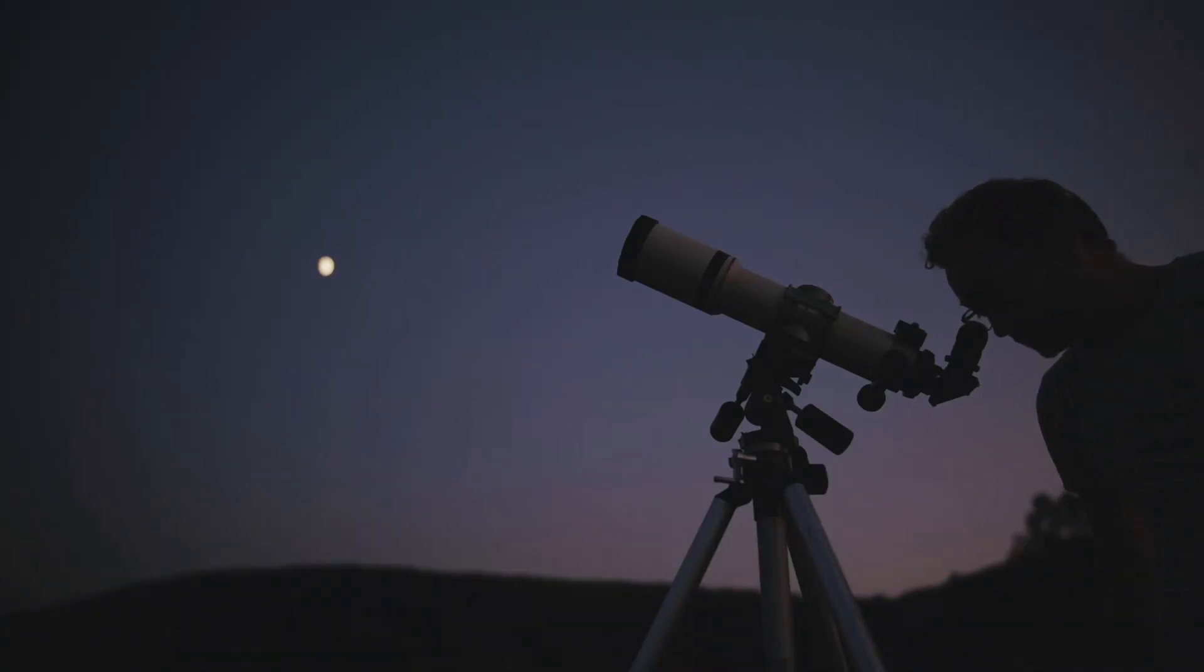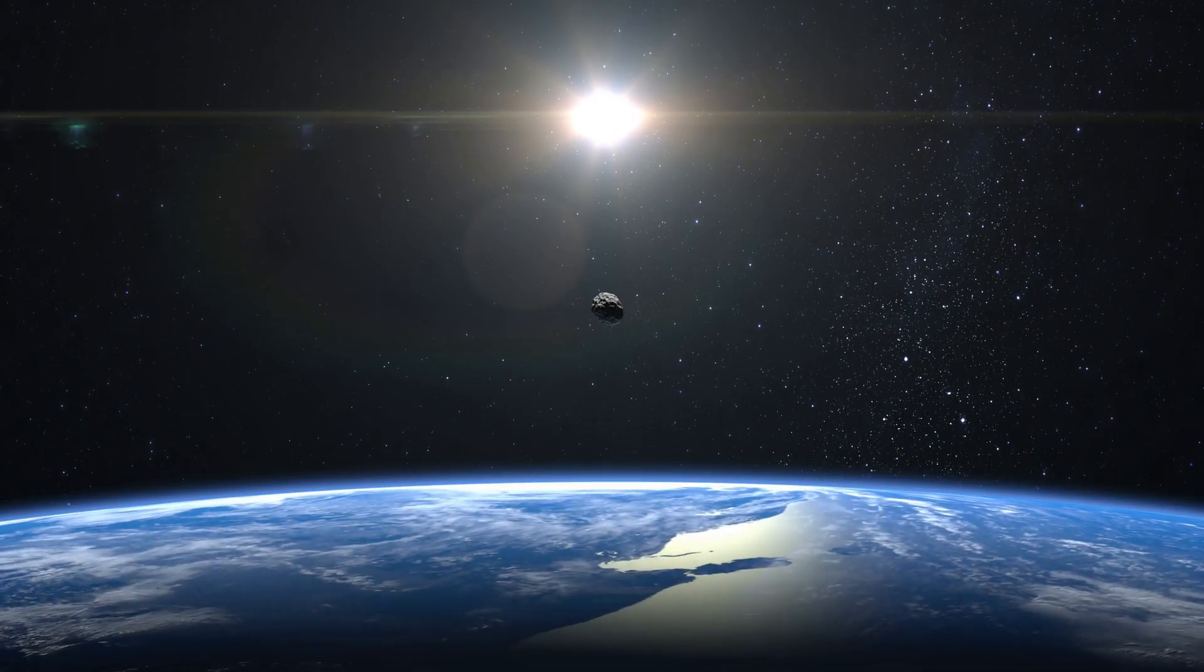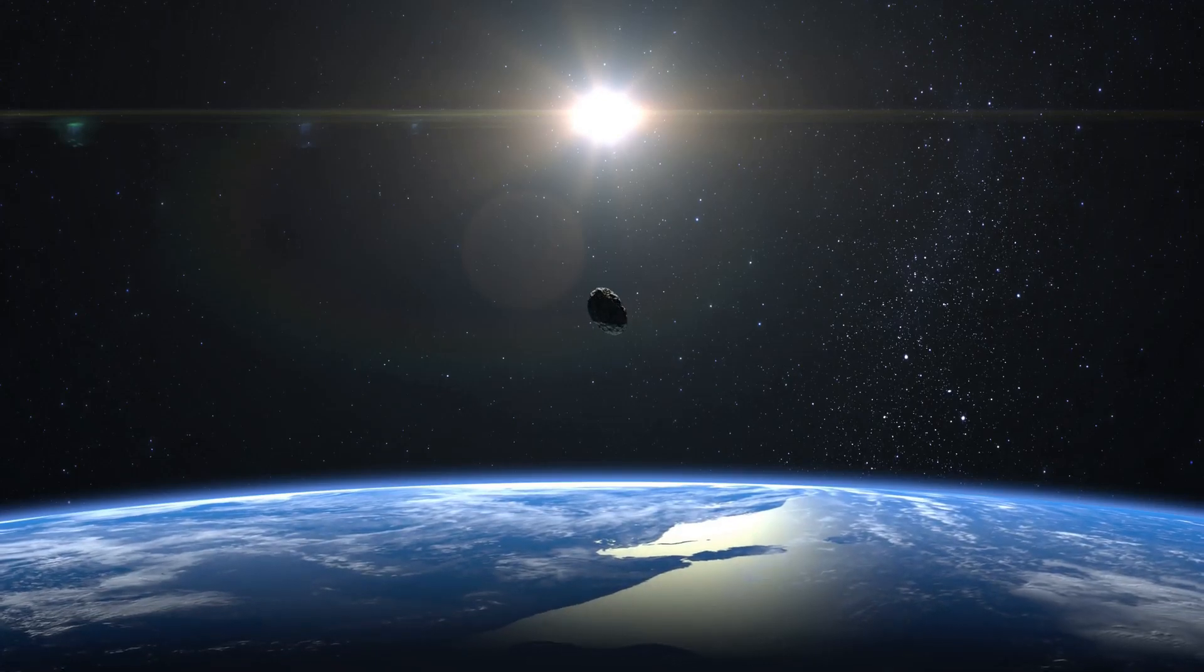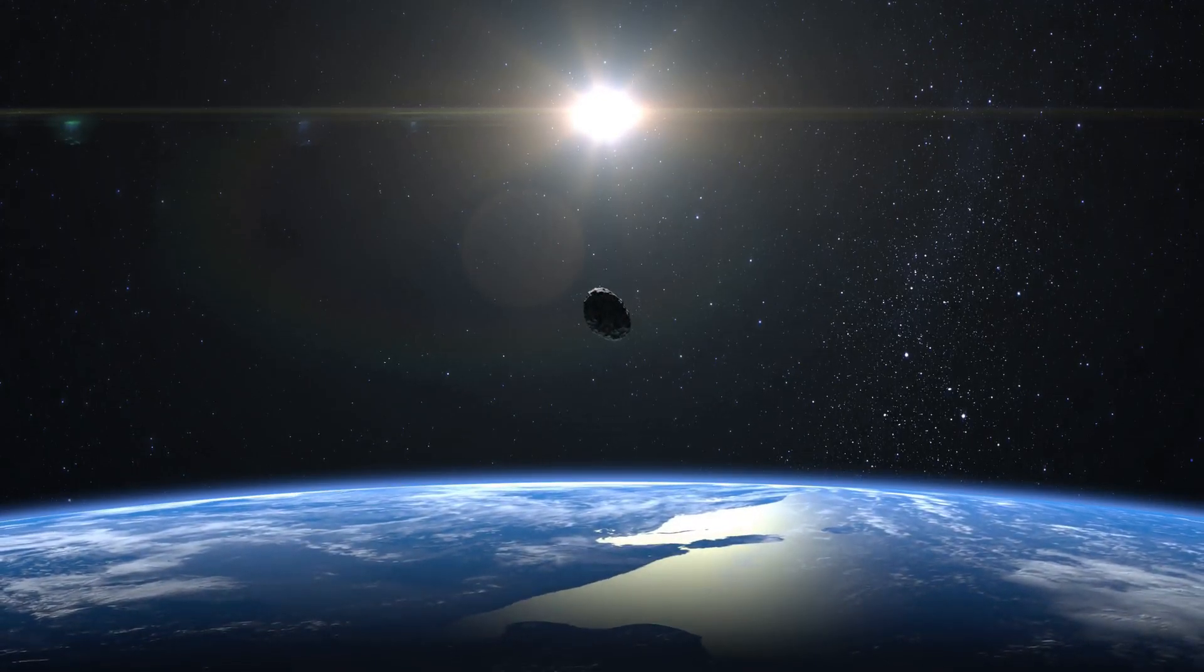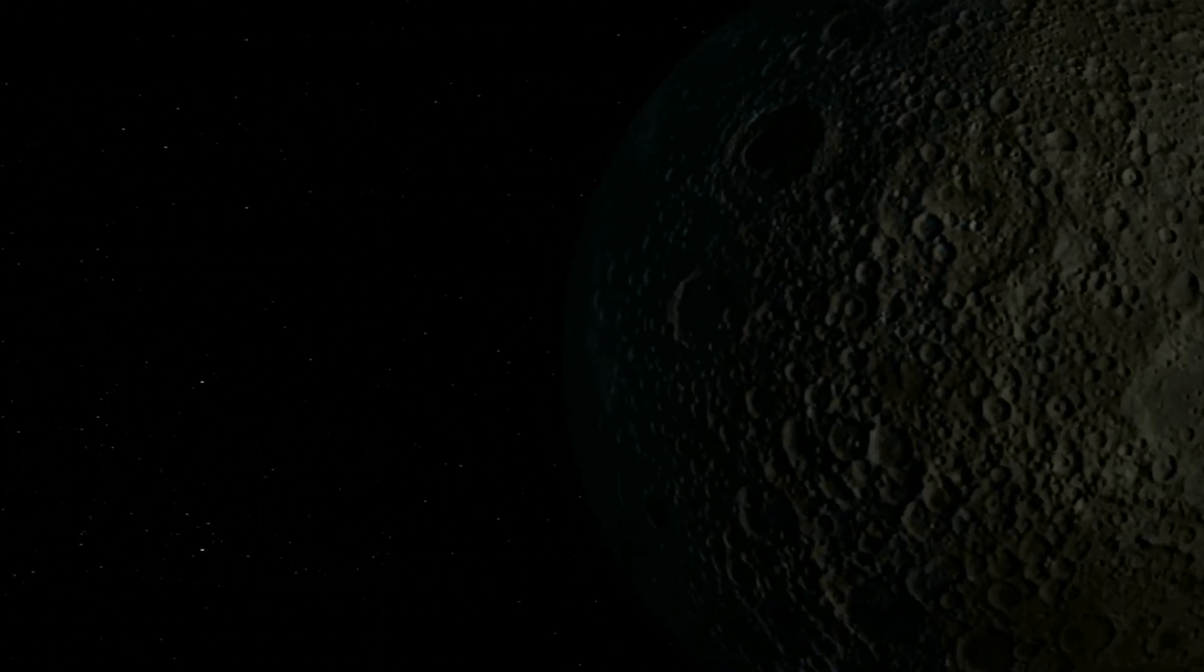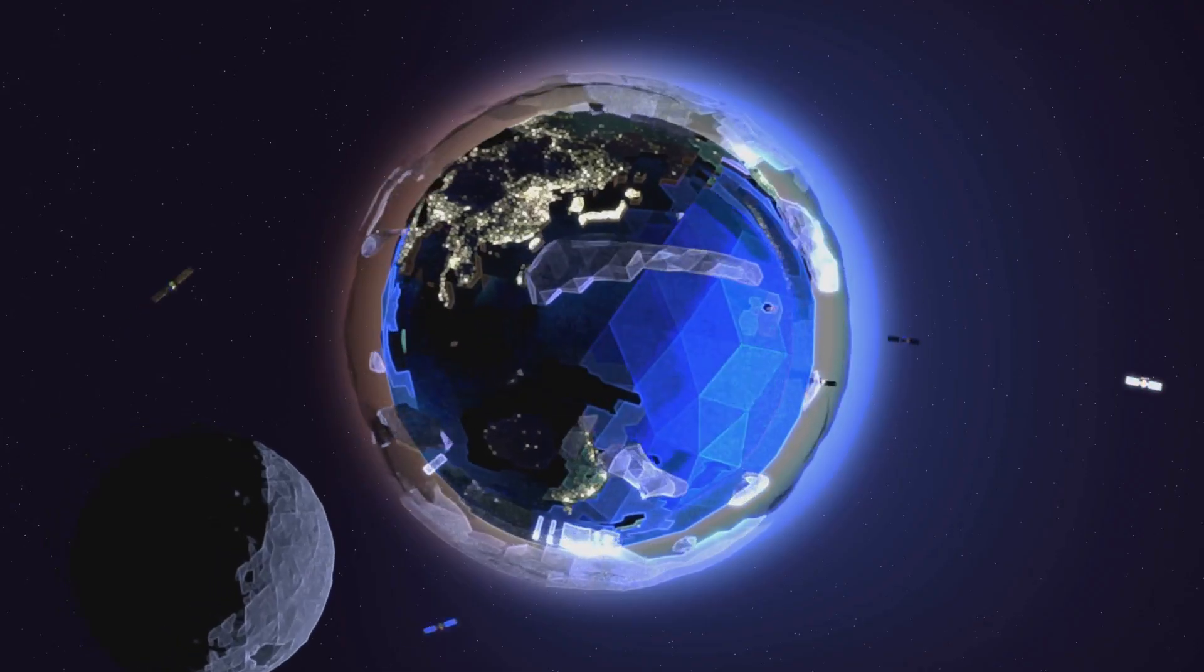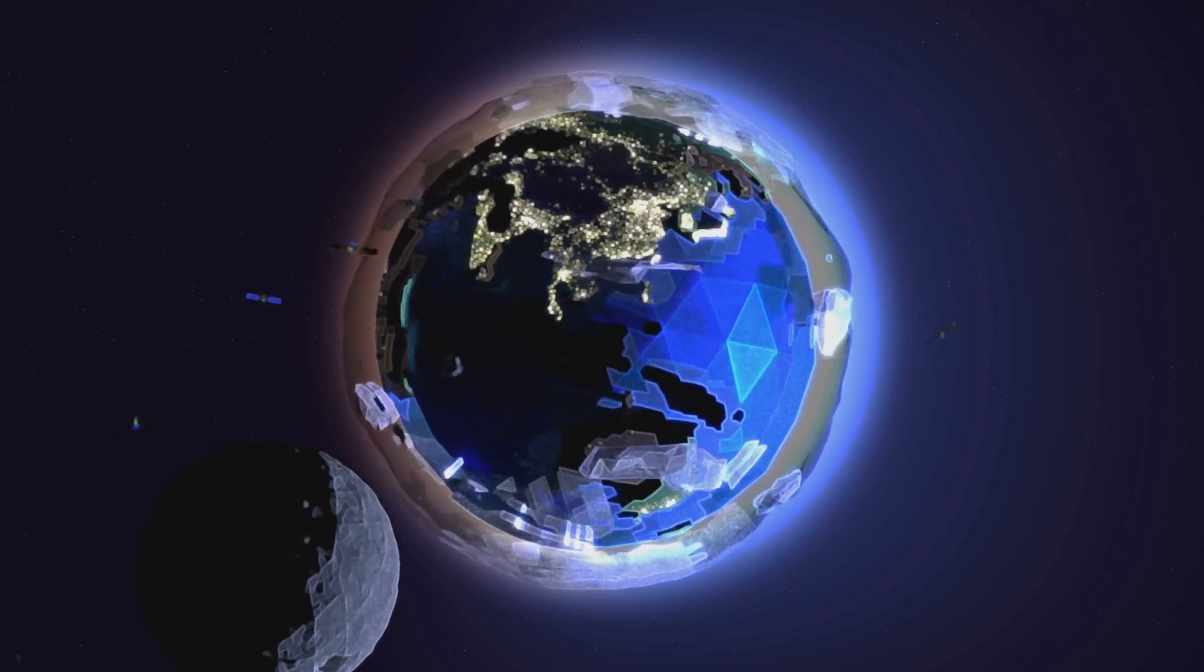Our planet has a new celestial companion, adding a touch of intrigue to our night sky. A small asteroid, designated 2024 PT5, has been temporarily captured by Earth's gravity, creating a fascinating phenomenon. This mini-moon is a reminder of the dynamic nature of our solar system, constantly in motion and full of surprises. It highlights the constant interplay of gravitational forces, a cosmic dance that shapes the orbits and paths of celestial bodies.